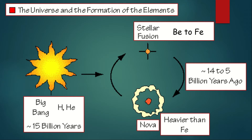During that time, beryllium to iron elements were formed, 14 to 5 billion years ago. Then stellar explosion or supernova happened, and during supernova, the elements heavier than iron were formed.